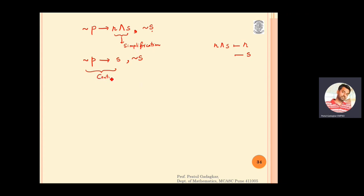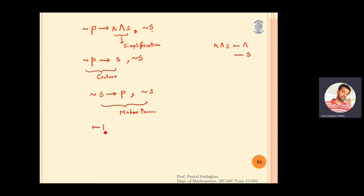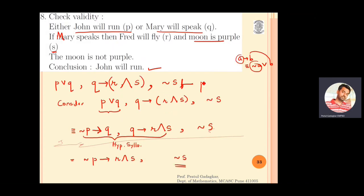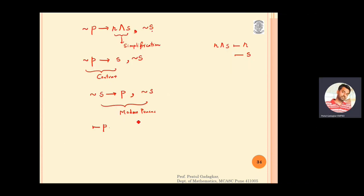Now by modus ponens, using negation s and negation s implies p, the conclusion is p — which is exactly what we wanted: John will run. So this argument is also a valid argument.